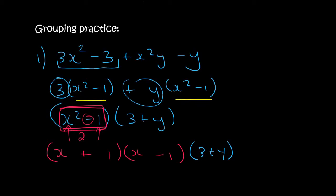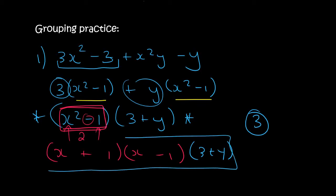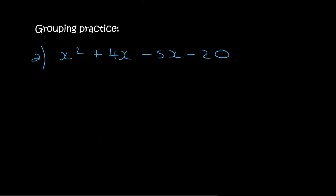I didn't actually realize that was going to turn into a difference of squares, but yes, that can happen — and that would typically be worth three marks in the test. We did our normal grouping and got to this step, then realized x squared minus 1 is a difference of squares, so we could factor that bracket further. Our final answer is this over here.